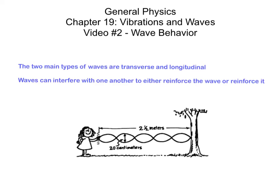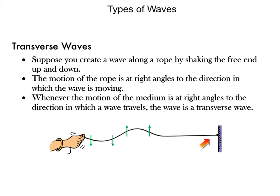Make sure you've got your notes ready to go. Suppose you were to attach a rope to a wall and hold the free end, then begin to shake the free end up and down. A pulse is going to travel down that rope and reflect back. The direction of the wave is from left to right down that rope, but the motion of the rope itself is up and down — at right angles to the direction the wave is moving.